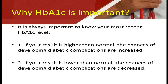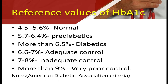Why is HbA1c important? It is important to know HbA1c because the higher the level, the greater the chance of diabetic-related complications. If the result is lower than normal, the chance of developing diabetic-related complications is lesser. The reference values are: normal 4.5 to 5.6%, pre-diabetic less than 6.4%, diabetic more than 6.5%, adequate control less than 7%, inadequate control 7 to 8%, and more than 9% indicates poor control, as per American Diabetes Association criteria.